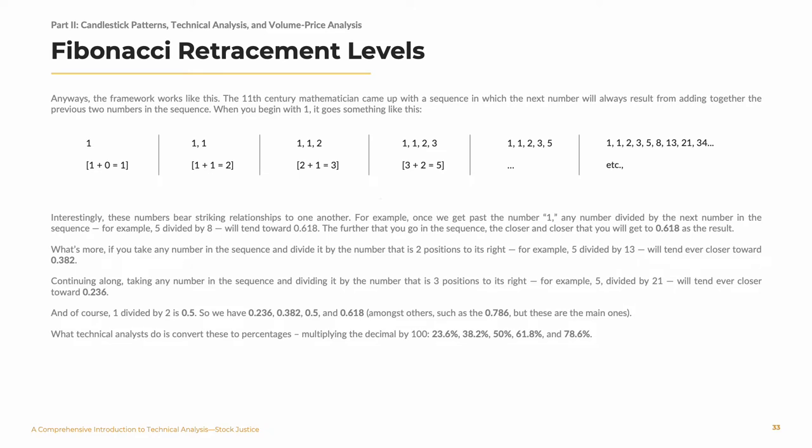The framework works like this. The 11th century mathematician came up with a sequence in which the next number will always result from adding together the previous two numbers in the sequence. When you begin with one, it goes something like this: one plus zero equals one, then one plus one equals two. Now you have one, one, two. Two plus one equals three, so you have one, one, two, three. Three plus two equals five. Et cetera. So you have one, two, three, five, eight, thirteen, twenty-one, thirty-four, et cetera.